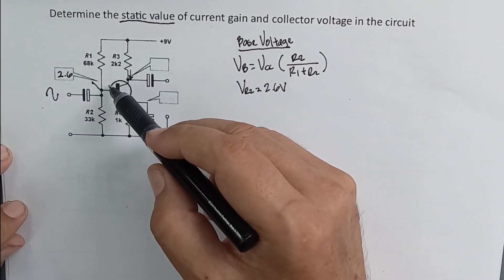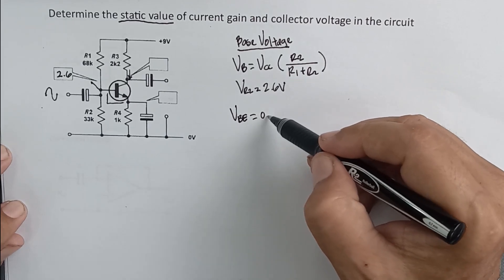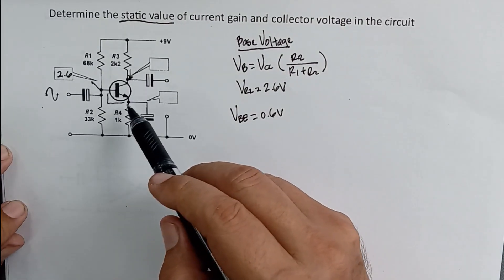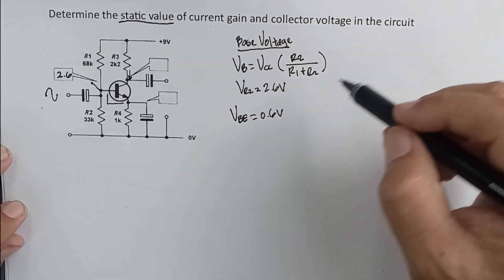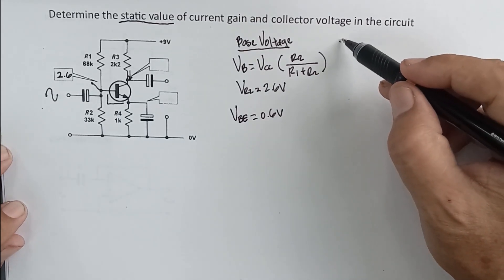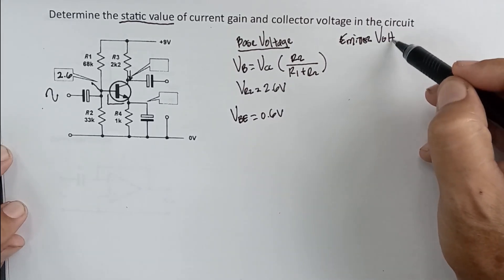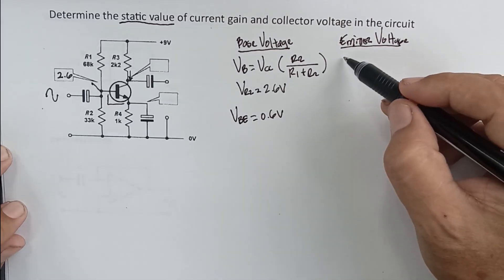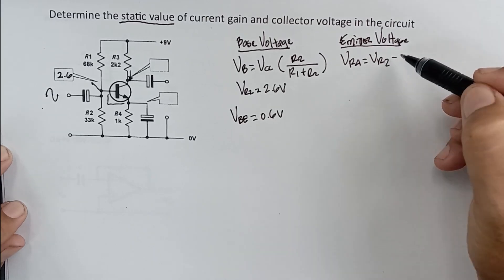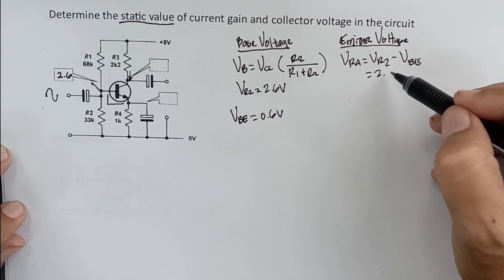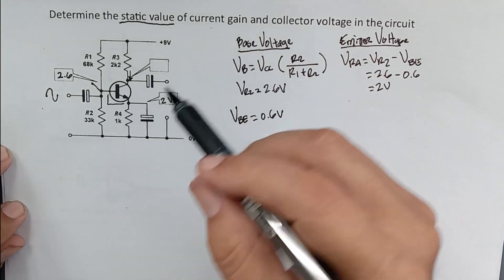The voltage drop across the base-emitter junction, V_BE, is 0.6 volts. So with 2.6 volts at the base and 0.6 volts across the base-emitter junction, the voltage across R4 is: VR4 = VR2 − V_BE = 2.6 − 0.6 = 2 volts. So the emitter node sits at 2 volts.